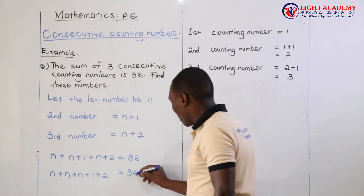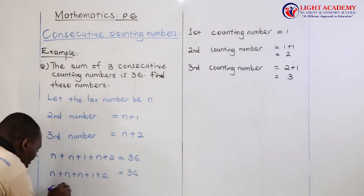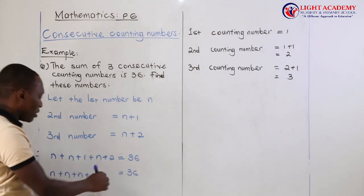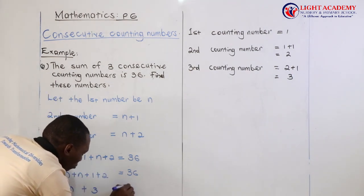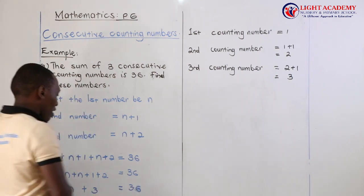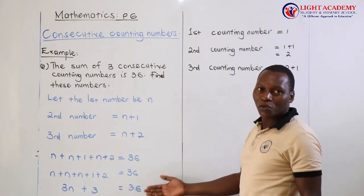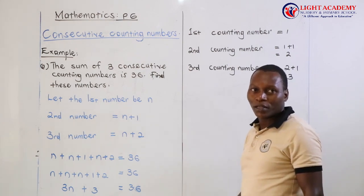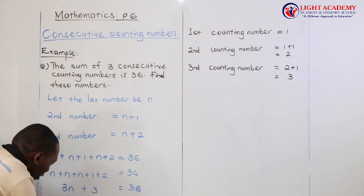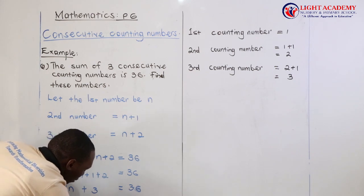From there, N plus N plus N gives us 3N, and 1 plus 2 equals 3. So we have 3N plus 3 equals 36. I collect like terms by subtracting 3 from both sides: 3N plus 3 minus 3 equals 36 minus 3.